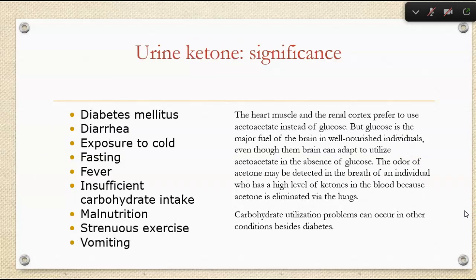As for ketone significance — you've heard of the keto diet — ketones in the urine can be seen in diabetes, diarrhea, fever, fasting, insufficient carb intake, malnutrition, strenuous exercise, and vomiting. The heart muscle and renal cortex prefer to use acetoacetate instead of glucose, but glucose is the major fuel of the brain in a well-nourished individual, though the brain can adapt to utilize acetoacetate in the absence of glucose. The odor of acetone can be detected in someone's breath when they have high ketone levels, because we're eliminating acetone via the lungs.